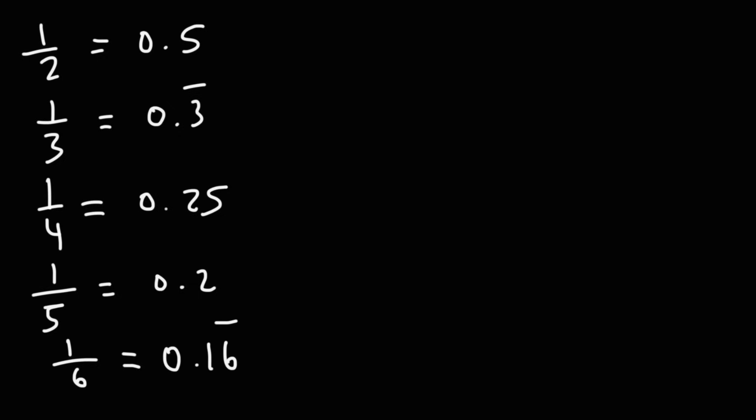You want to know these values. You may want to commit them to memory. 1 divided by 2 is 0.5, 1 divided by 3 is 0.3 repeating, 1 divided by 4 is 0.25, 1 fifth is 0.2, 1 over 6 is 0.16 repeating, 1 over 7 is approximately 0.143, 1 over 8 is 0.125, 1 over 9 is 0.1 repeating, and 1 over 10 is 0.1. If you know these values, it will make it easier to divide numbers mentally in your head.